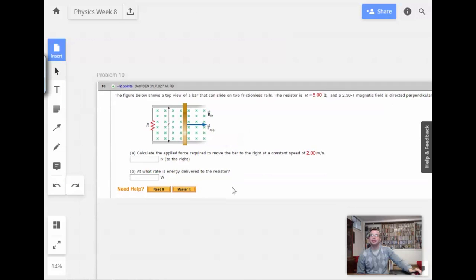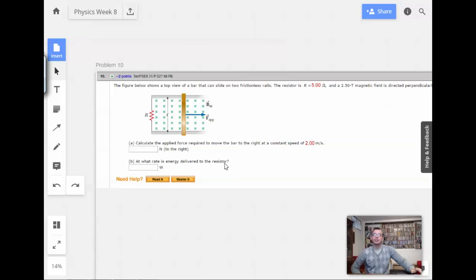Let L equal 1.2 meters. Calculate the applied force required to move the bar to the right at a constant speed of 2 meters per second.